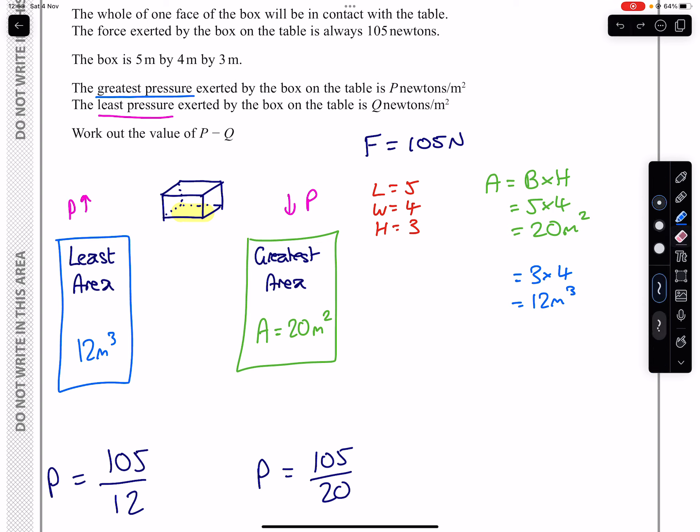When we're looking at the greatest pressure, that value is going to be P. So greatest pressure comes from least area, which means this value of P I will leave unchanged.